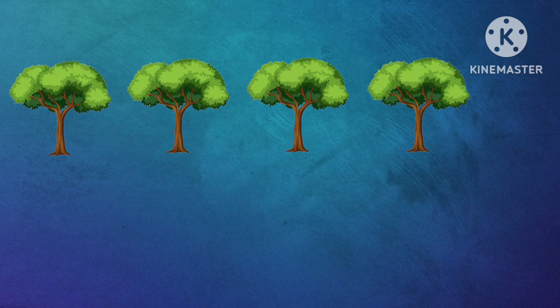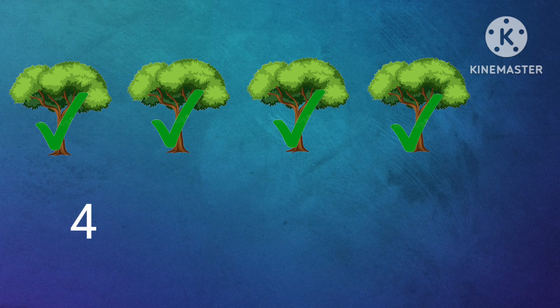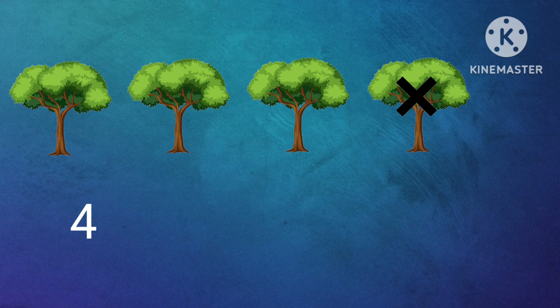How many trees we have? Shall we count? 1, 2, 3, 4. There are 4 trees. In 4 trees we have cut 1 tree. So how many trees we have now? Shall we count? 1, 2, 3. So 4 minus 1 equal to 3.